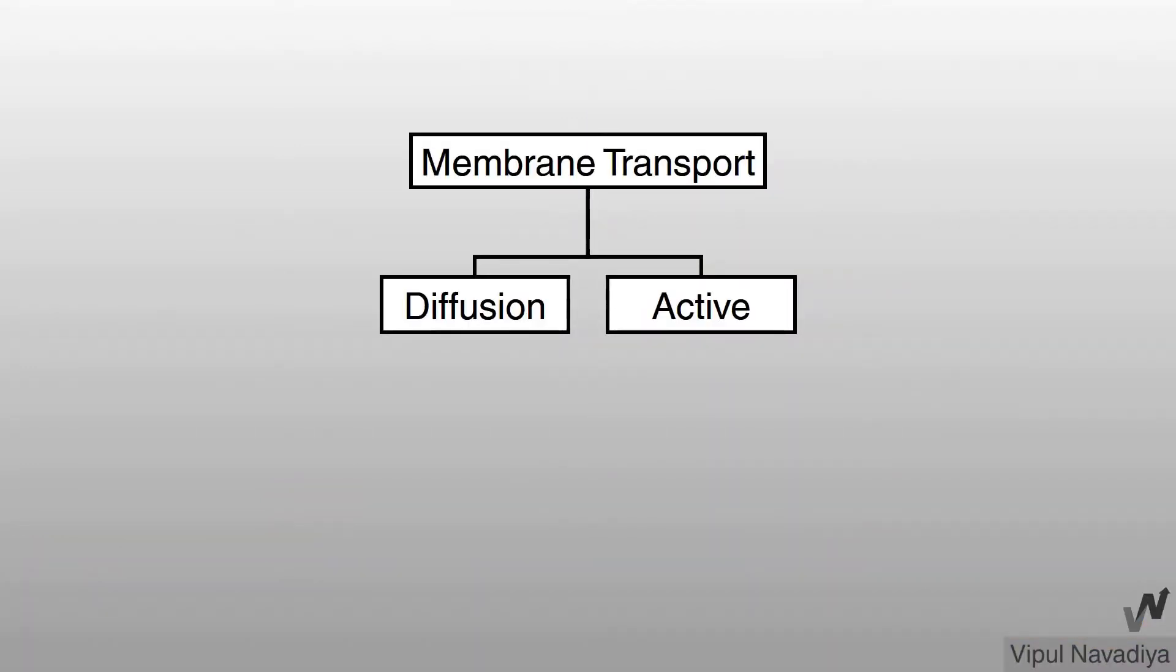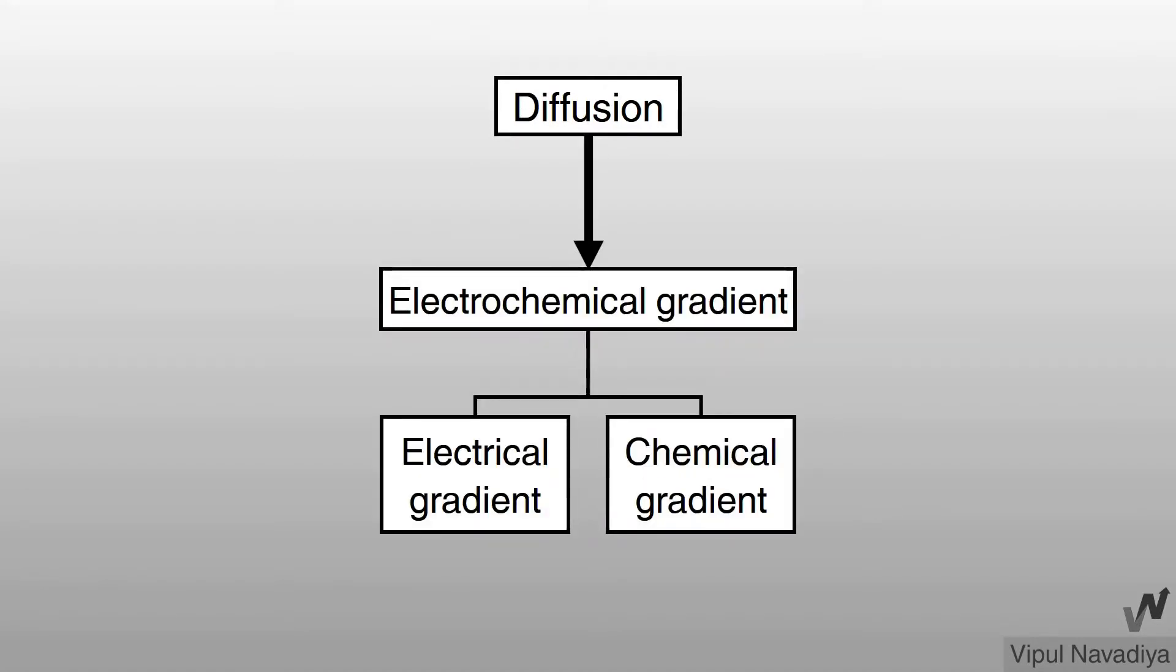Now types. Transport can occur by diffusion or active transport. Diffusion is a passive process driven by electrochemical gradient. Electrochemical gradient, as name suggests, consists of two parts. Electrical gradient and chemical gradient.